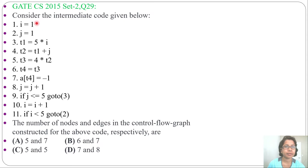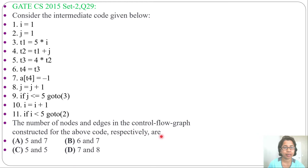Let's solve a previous question on control flow graph from compilers. This question was asked in GATE CS 2015 Set 2, question number 29. Consider the intermediate code given below. The question asks for the number of nodes and edges in the control flow graph constructed for the above code.